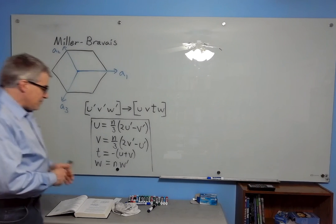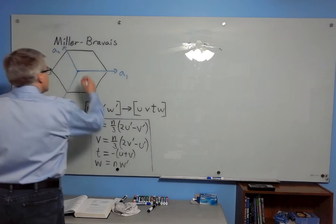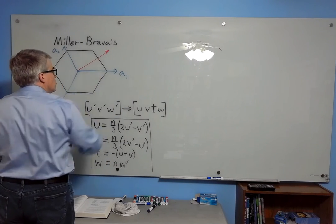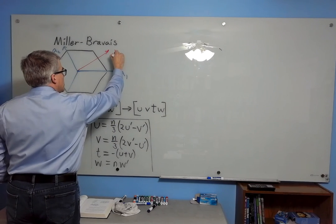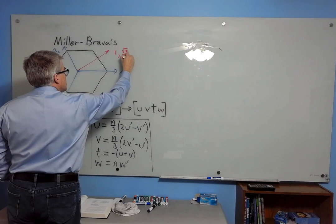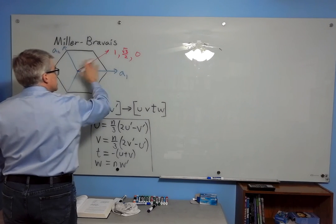So if you have a vector, say this one, which would have coordinates of 1 unit and root 3 over 2 units and 0 units in the z.